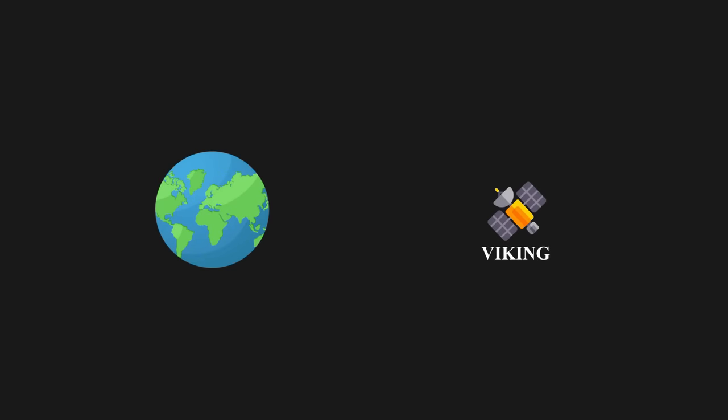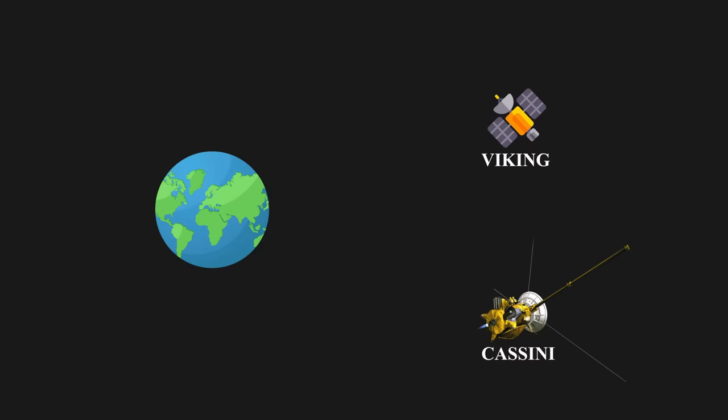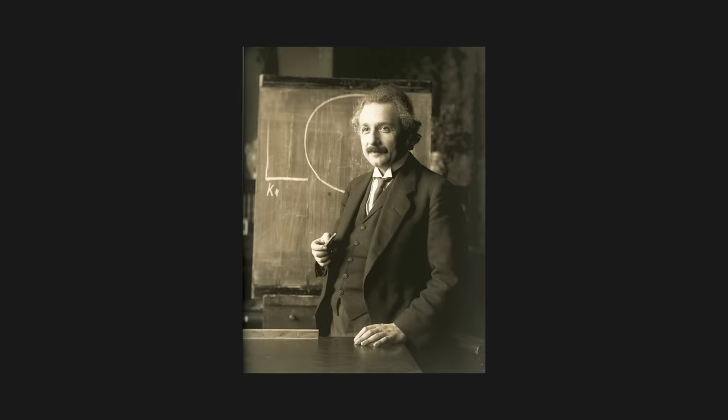In 1976, the experiment was conducted by using the round-trip time of radio signals transmitted from Earth to the Viking spacecraft. In 2003, Cassini spacecraft did the same experiment. Their results agree with the predictions of general relativity.